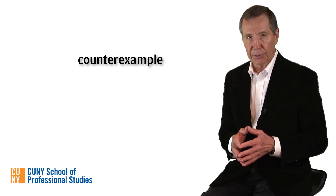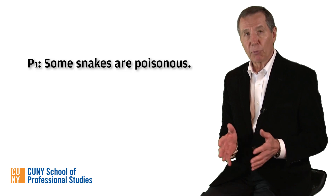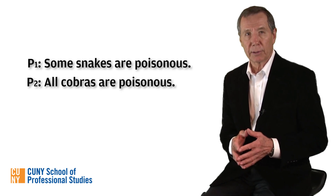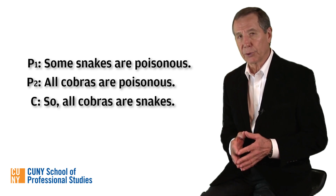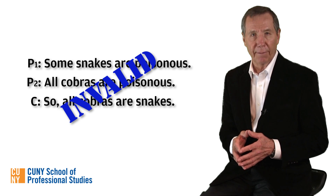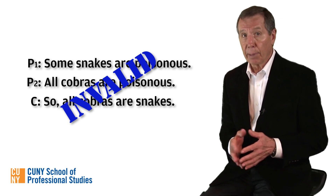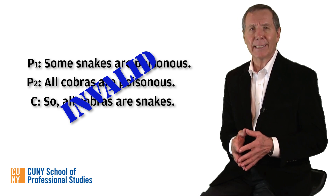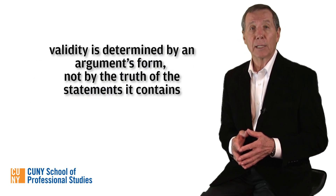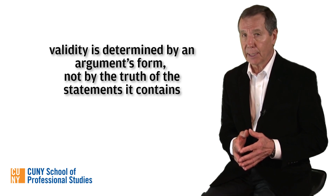Let's look at a specific instance. The following argument is invalid. Premise one: some snakes are poisonous. Premise two: all cobras are poisonous. Conclusion: all cobras are snakes. Now, it's not immediately obvious that the argument is invalid — it does have one thing going for it: all the claims it makes are true. But we know that doesn't make any difference when determining validity, since validity is determined solely by the argument's form and not by the truth of the statements it contains.